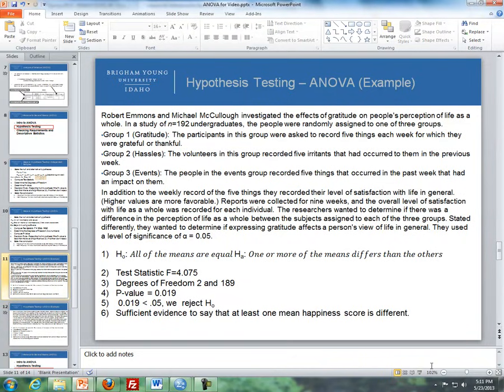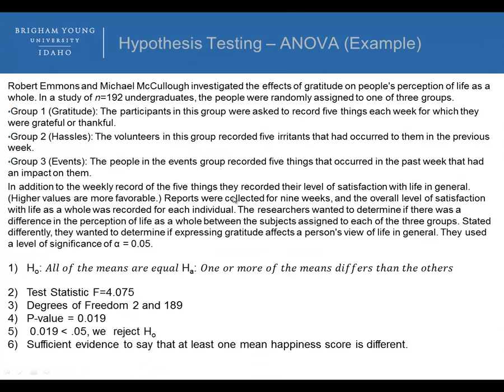Now I'd like to go through an example. This is from the online textbook. Robert Emmons and Michael McCullough investigated the effects of gratitude on people's perceptions of life as a whole. In a study of N equals 192 undergraduates, people randomly assigned to one of three groups. Group one was gratitude, where they listed five things each week they were grateful for or thankful. Group two was hassles, listing five irritants that occurred. Group three, the events, just listed the events that happened during the past week that had an impact on them. In addition to the weekly record of five things they recorded,